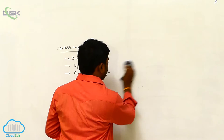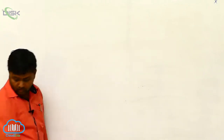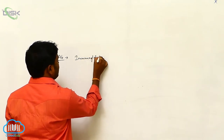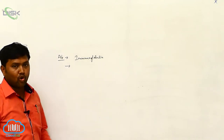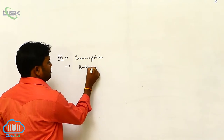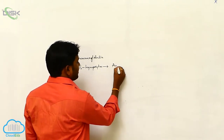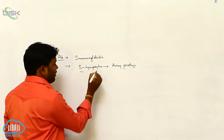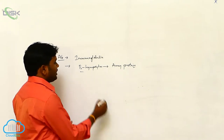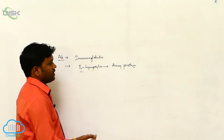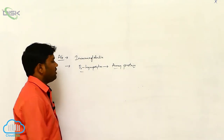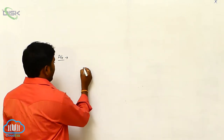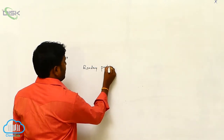Now let's see antibodies. An antibody is also called an immunoglobulin. When a pathogen enters the body, B lymphocytes immediately produce army-type proteins called antibodies. The major concept of antibody structure was proposed by Ronde Porter.